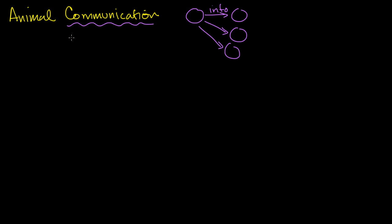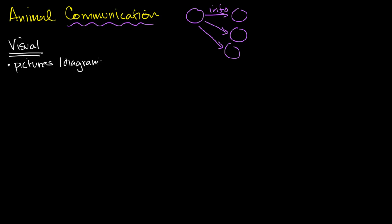It's interesting because even we humans are animals, and the more we think about this, the more types of communication we'll see around us. So let's think about the types of animal communication. We can think of visual communication — just me drawing a diagram is a form of visual communication. We could have things like pictures, diagrams, and writing, which conveys ideas and information that you look at.